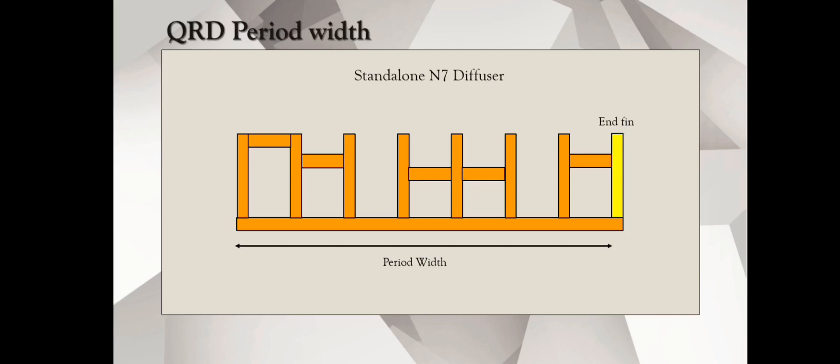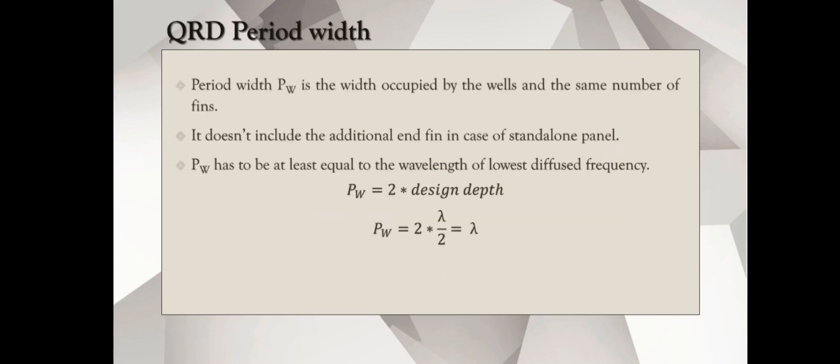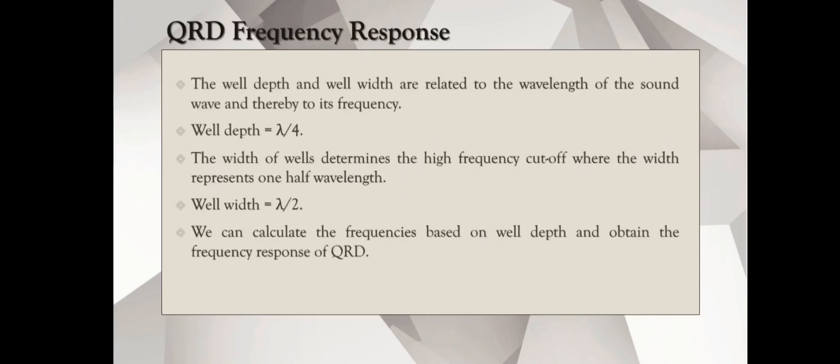Another important parameter of a QRD is a period width. Period width is the width accommodating even equal number of fins and wells. We know this diffuser has 7 wells, but there are 8 fins for this particular standalone diffuser, because we're enclosing the space. But, period width is only the total width occupied by 7 wells and 7 fins, which means we've got to neglect the 8th fin so as to calculate the period width. What is the significance of the period width? Period width helps us to determine the lowest frequency to be diffused. Period width is twice the design depth and we know design depth is lambda over 2. If you do the math, you get period width to be lambda. It gives us a very important information.